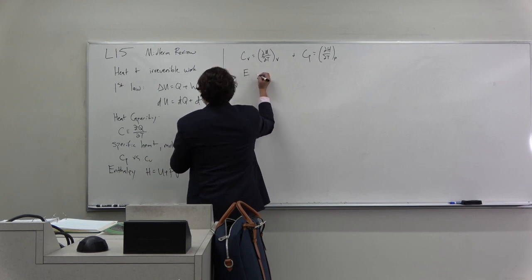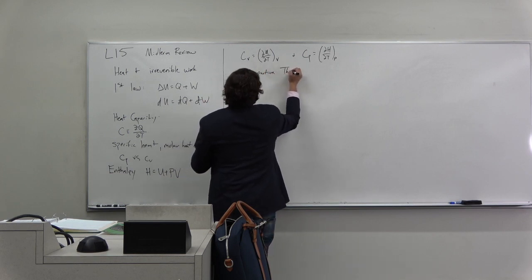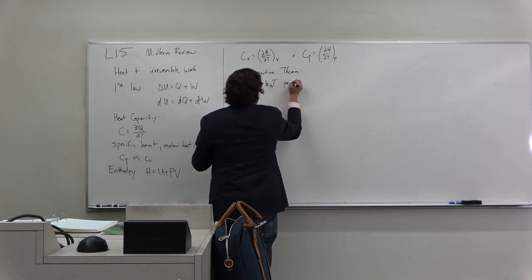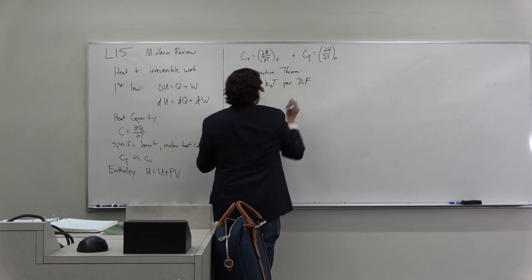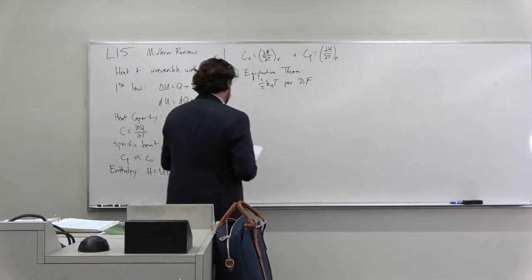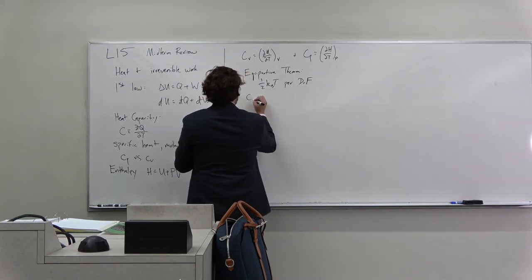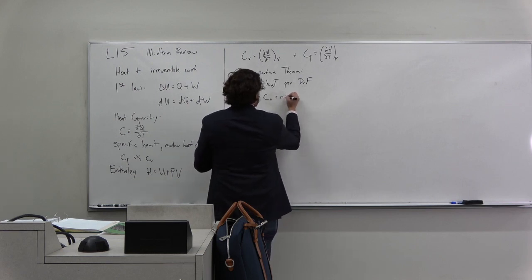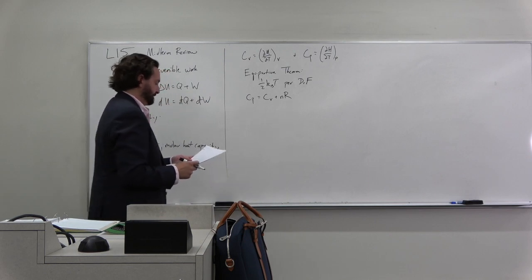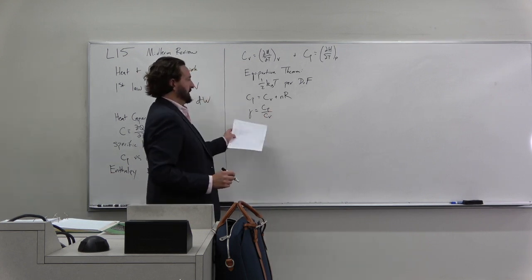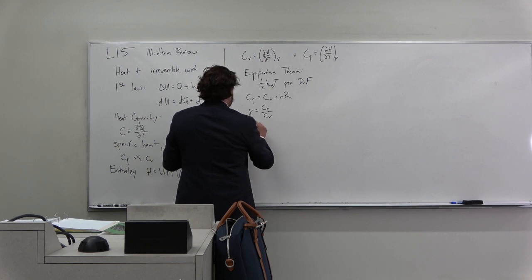We went on and talked about the equipartition theorem, which was there's a half kT for each degree of freedom. We used the equipartition theorem in part to derive the relationship between cv and cp, which was cp equals cv plus nr. We defined gamma to be the ratio of cp to cv, and that was useful especially when talking about our adiabats.